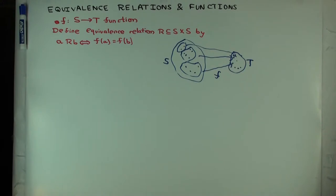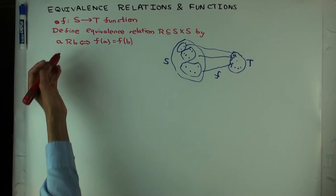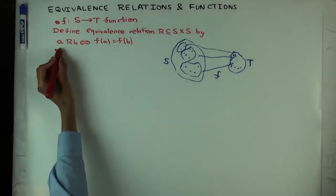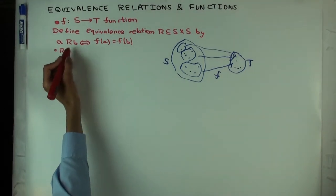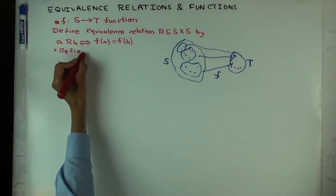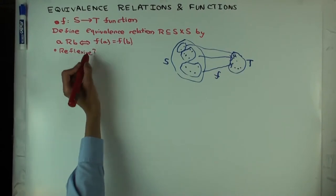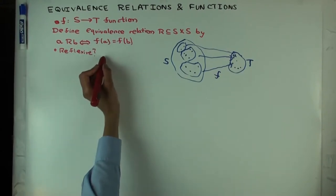Why is this an equivalence relation, if you think of an equivalence relation as a reflexive, symmetric, and transitive relation? Let's check all the conditions. Is it reflexive? Is every element related to itself?